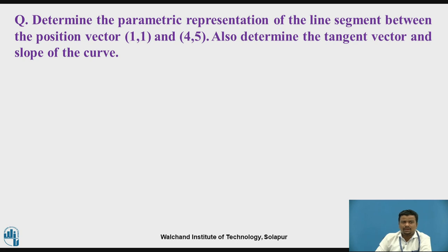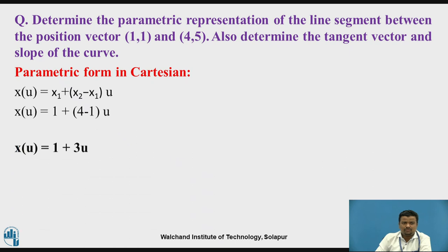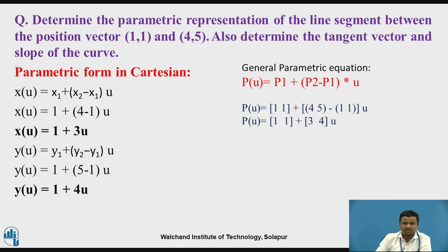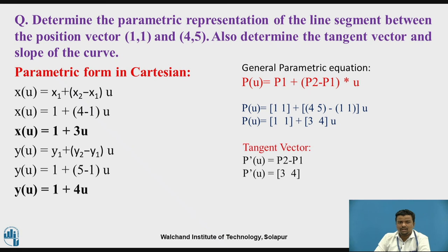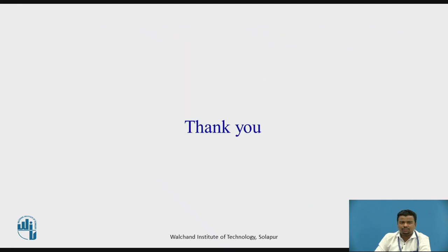We have to find the parametric equation for position vectors (1, 1) and (4, 5). So x(u) = 1 + 3u, y(u) = 1 + 4u. The general parametric equation is (1, 1) + (3, 4)·u. The tangent vector is (3, 4) and the slope of the curve is 4/3. Thank you.